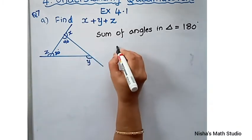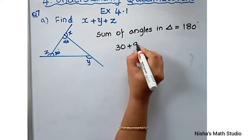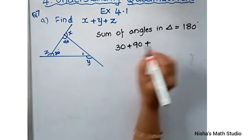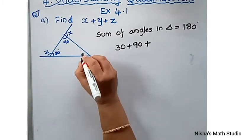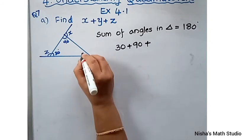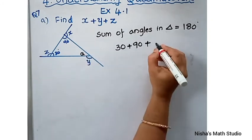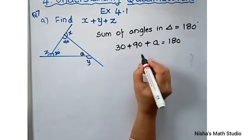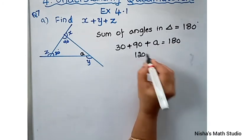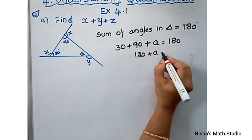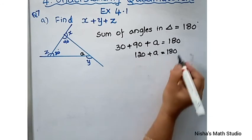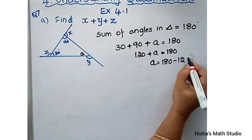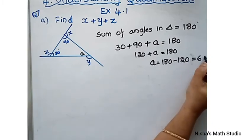I know two angles: 30 plus 90 plus A equals 180. So 90 plus 30 gives 120, and A equals 180 minus 120, which equals 60 degrees. So the third interior angle of the triangle is 60 degrees.